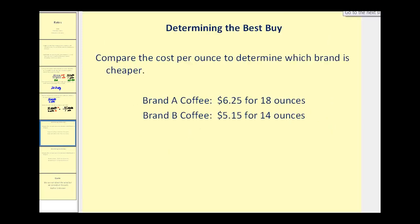Another great use of unit rates is when you're trying to determine the best buy of similar products. When you go to the store and compare brands, it's sometimes confusing because the size of the package is never the same. Here, when we're comparing two brands of coffee, brand A costs $6.25 for 18 ounces, and brand B costs $5.15 for 14 ounces. If we can find the unit rate for each of these, or the cost per ounce, we can determine which one is the best buy.